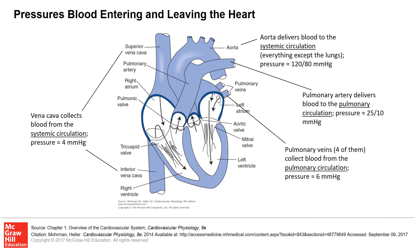First, a little reminder. These are the rough approximate normal pressures of blood entering and leaving the chambers of the heart. We say that the systemic arterial pressure is normally around 120 millimeters of mercury systolic and 80 millimeters of mercury diastolic.